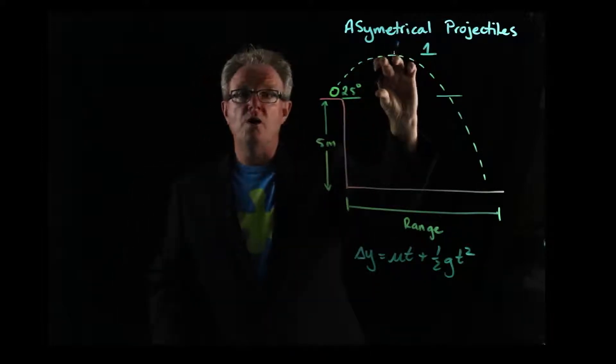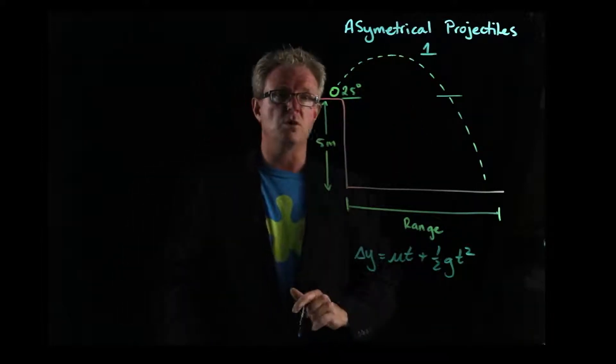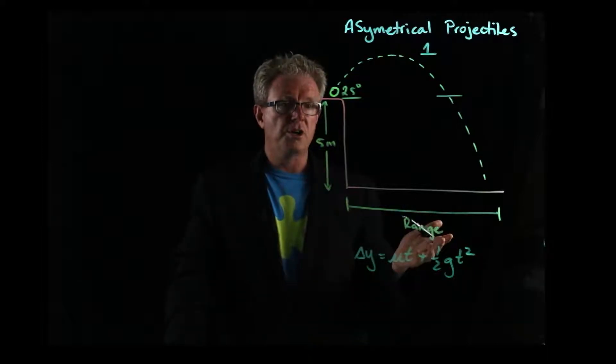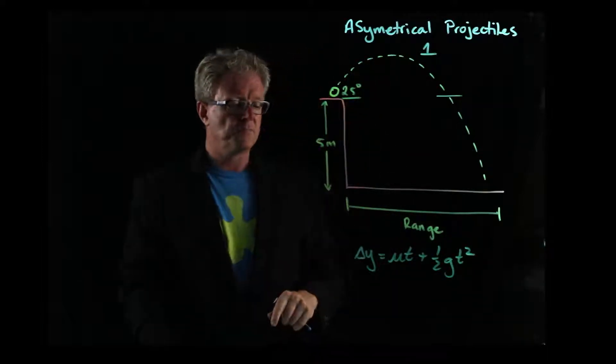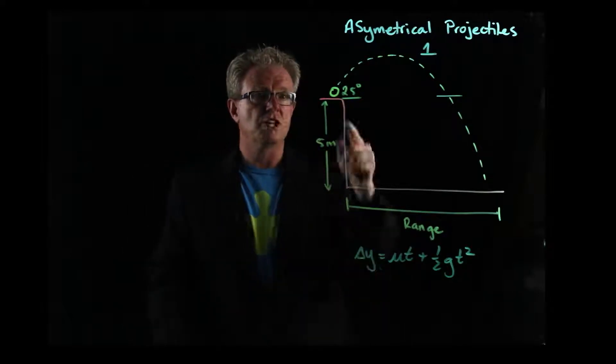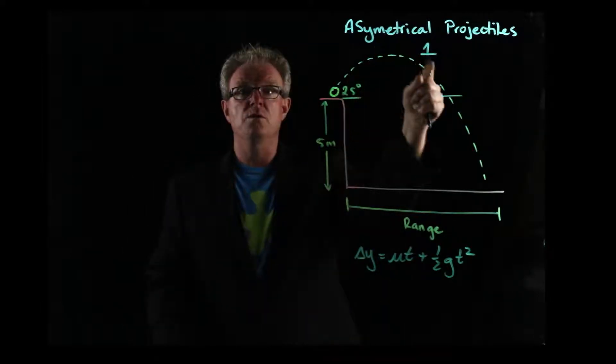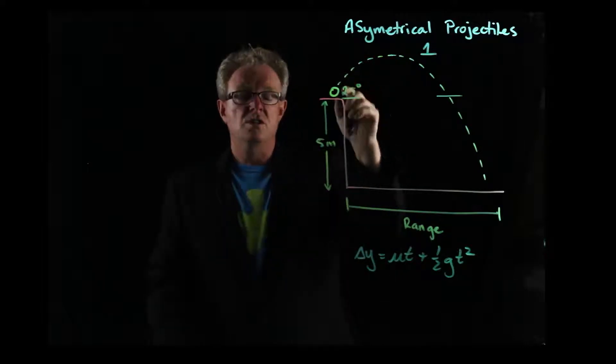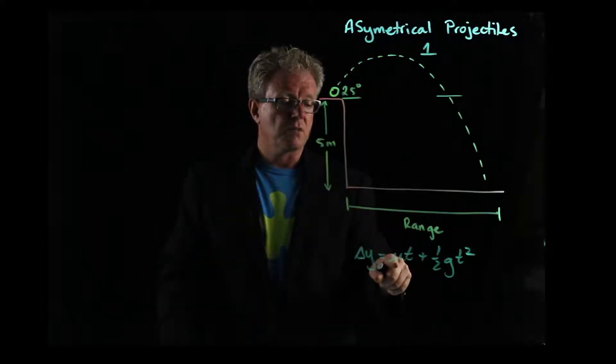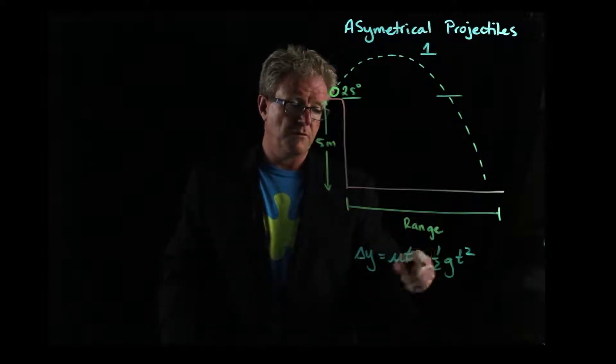If we didn't know the height, then we could still use this equation. And then we could go, okay, if we knew the initial velocity, we could say that the change in y was zero because it starts here and finishes there and so the change in y was zero. And if we knew the initial velocity there, we could then put the value in and we could find out a time of flight.